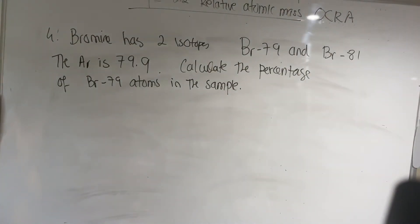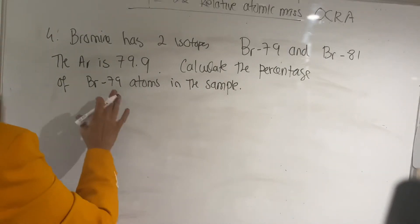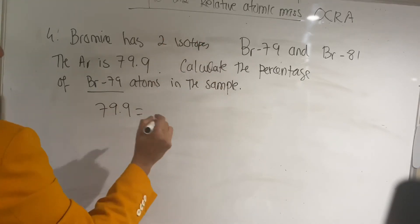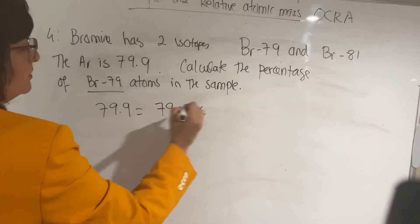The next question: bromine has two isotopes, bromine-79 and bromine-81. The relative atomic mass of bromine is 79.9. They don't give you any percentage, but they ask you what is the percentage of 79?